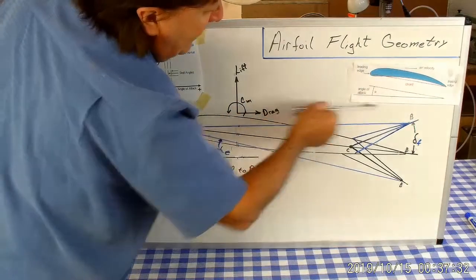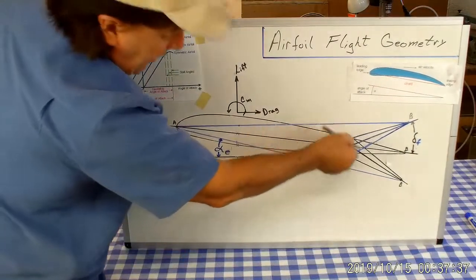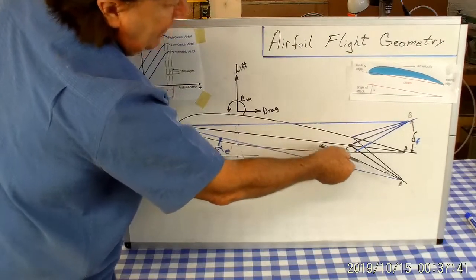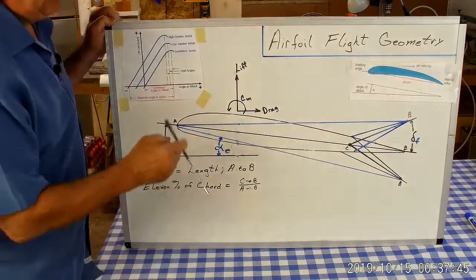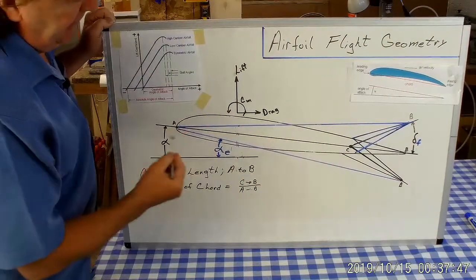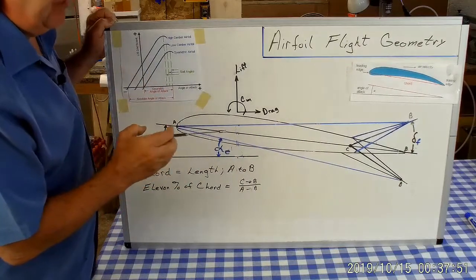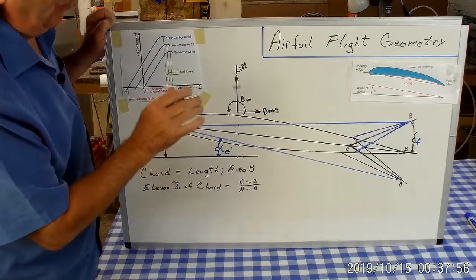We're essentially cambering the airfoil when we deflect a flap. Flap down—high camber. Flap up—lower camber or negative camber. So this concept of an effective cord line is perfectly valid and very important to understanding what I'm going to tell you in the next round about what's going on with the elevon and what happens with the flying wing.